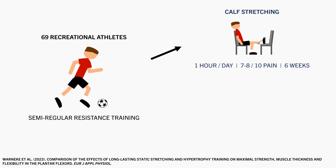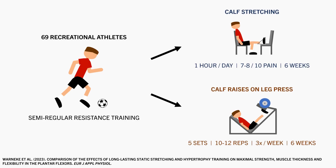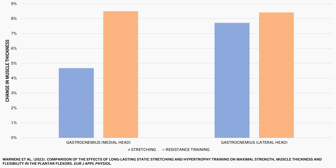One group stretched their calves to a 7–8 out of 10 pain level in an orthosis continuously for one hour per day for six weeks. The other group performed calf raises on a 45-degree leg press for five sets of 10–12 reps to failure, three times per week for the same six weeks. As expected, the resistance training group saw significant increases in muscle thickness of both the lateral and medial gastrocnemius muscles, shown in orange. However, the stretching group also achieved comparable growth, although not quite to the same extent as the resistance training, shown in blue.